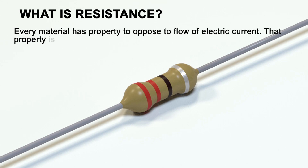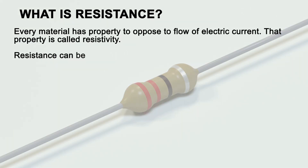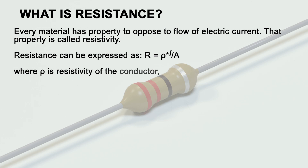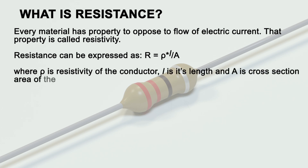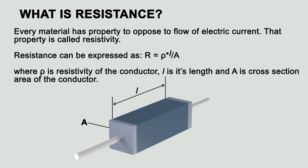What is resistance? Every material has the property to oppose the flow of electric current. That property is called resistivity. Resistance can be expressed as R equals rho times L divided by A, where rho is the resistivity of the conductor, L is its length, and A is the cross-sectional area of the conductor.